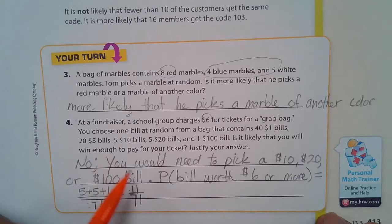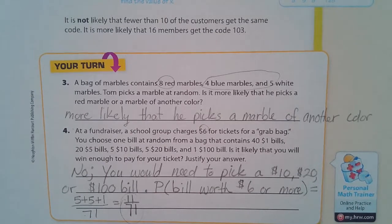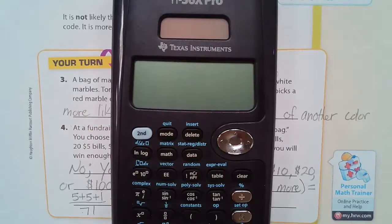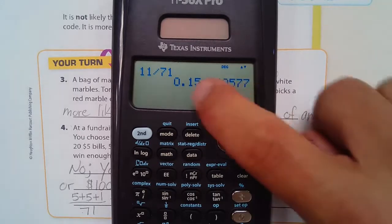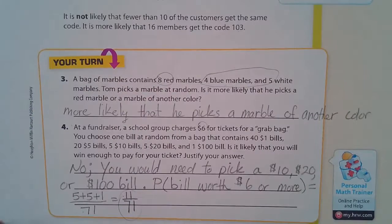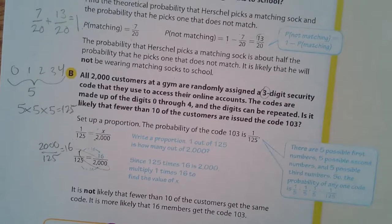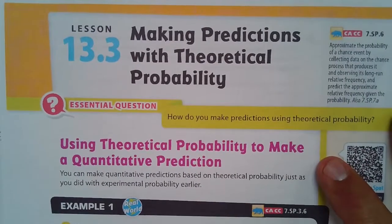Now, is it likely? No. You would need to pick a 10, 20 or $100 bill. And just 11 out of 71, that is not so good. And if I had 11 divided by 71, I mean, let's look at our chances here. If I have 11 divided by 71, I only have a 15% chance. 0.15 is 15%. Not so good. And so that is what you need to know about making predictions with theoretical probability.